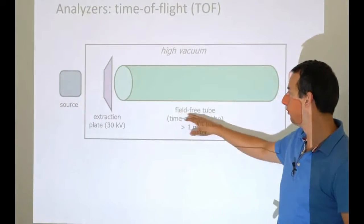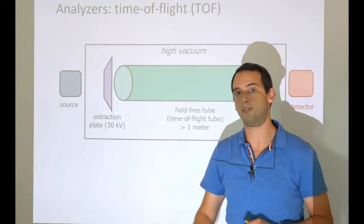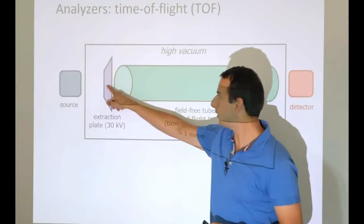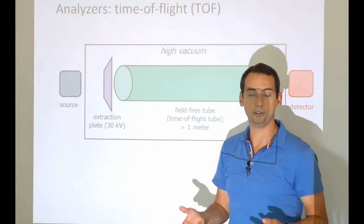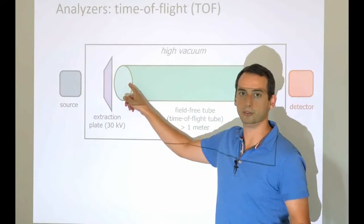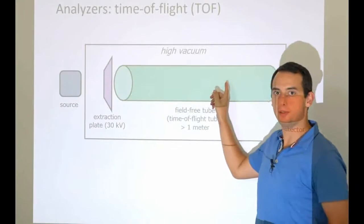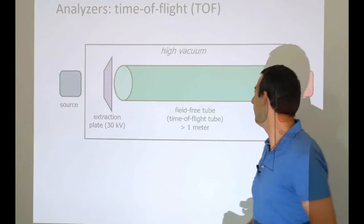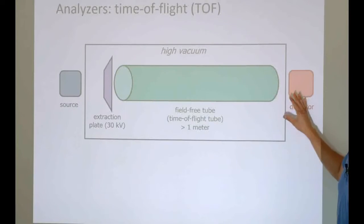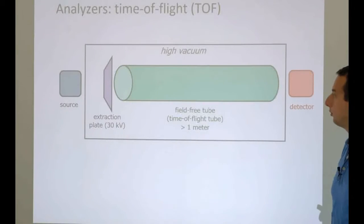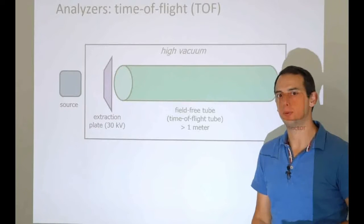That's why they call this a field-free tube — it's essentially just a vacuum tube machined to very precise dimensions. The ions that have been accelerated through the electrical field generated by the extraction plate will have a certain velocity. With that velocity, because there is no resistance from the air (it's vacuum) and because there is no electrical field, they will just continue with this speed and travel along the length of this tube. At the very end we will have a detector, which will be able to find out when a molecule has traversed this field-free tube. These tubes are typically longer than a meter, and there's a reason why they're long — but we'll get back to that.